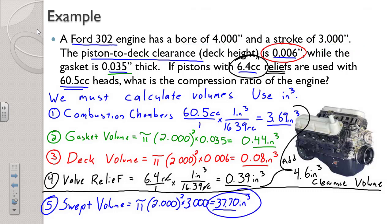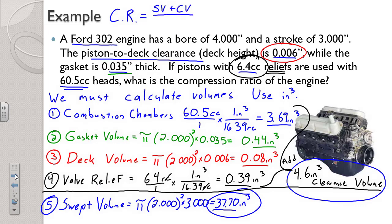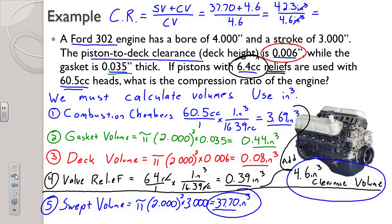Since we know our swept volume and our clearance volume, we can calculate our compression ratio. Compression ratio is swept plus clearance divided by clearance. So: 37.70 plus 4.6 divided by 4.6. Adding those two on top together gives us 42.3 cubic inches divided by 4.6 cubic inches. The units cancel, and if you divide, you get 9.2 — keeping one decimal. So 9.2 to 1.